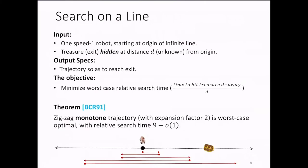I will now briefly discuss the result of Baeza Yeh et al., mostly to illustrate the notion of a monotone trajectory. In this problem, the search domain is a line, and as in our case, a unit speed robot starts from an arbitrary point that I call the origin. Again, there is a hidden treasure at unknown distance, but now the searcher is not faulty and detects the treasure if she walks over it.